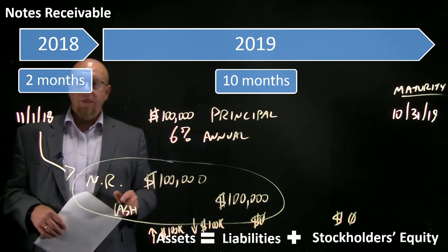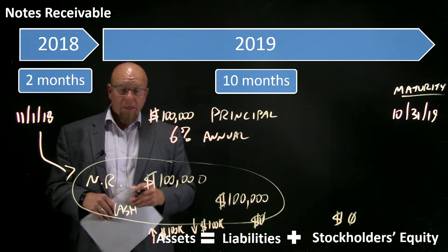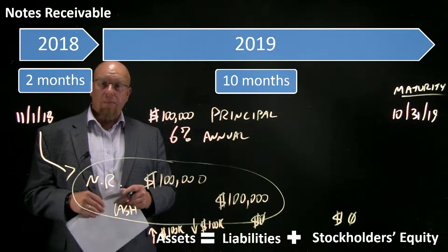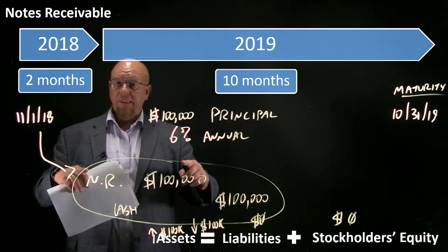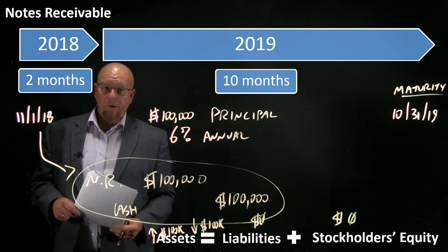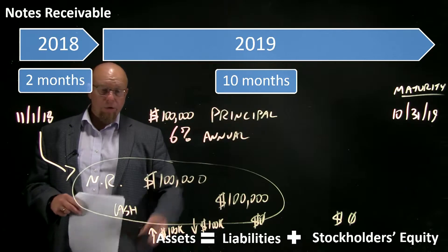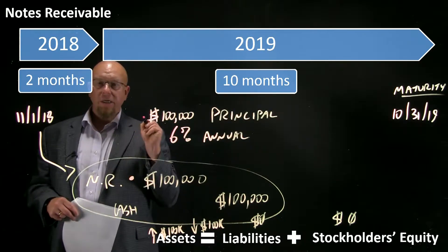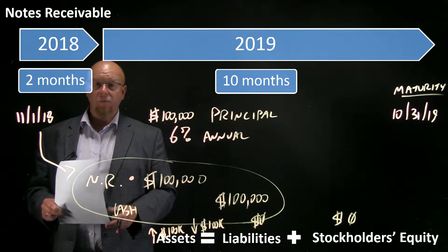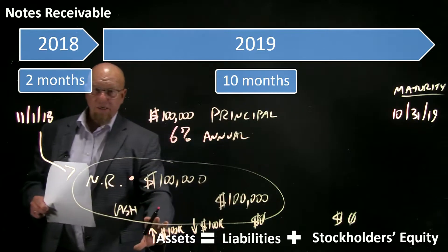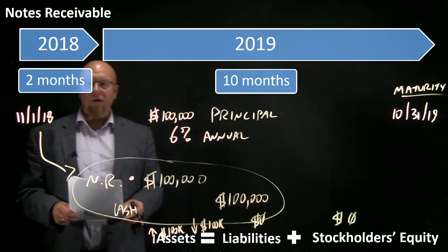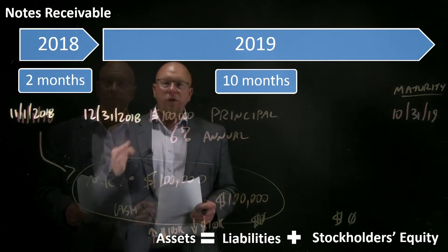Cash goes down and notes receivable goes up, but cash is a more liquid asset than notes receivable. We've somewhat impaired the company's liquidity by trading a very liquid asset for one that's less liquid. If we need money to pay our bills, we don't have that cash available. To convert this asset to cash, we need to collect from the borrower — which carries risk and takes time.